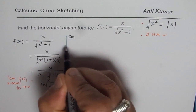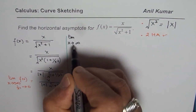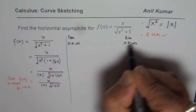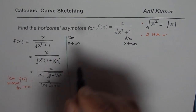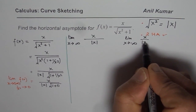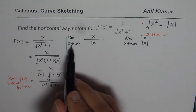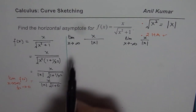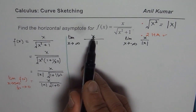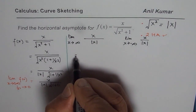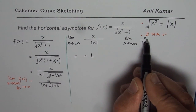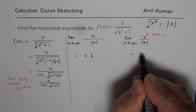Let us consider positive and negative infinity separately. The limit when x approaches positive infinity and the limit when x approaches negative infinity. Since square root of 1 is 1, our function simplifies to x over |x|. When x approaches positive infinity, x is positive, so |x| is also positive — this equals positive 1. However, when you are approaching negative infinity, substituting something like negative 1000, you get negative 1 as your answer.